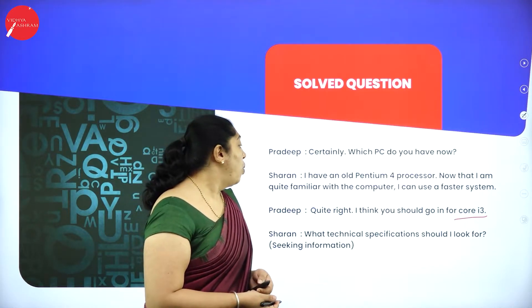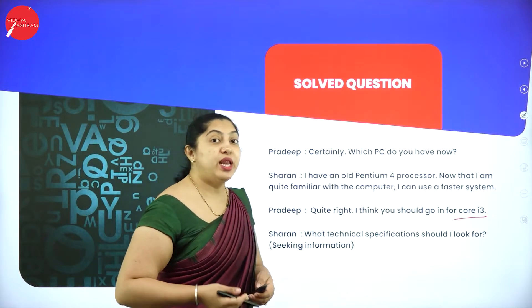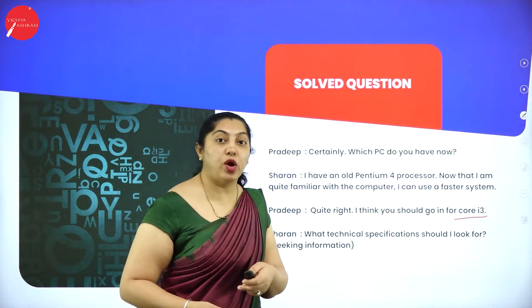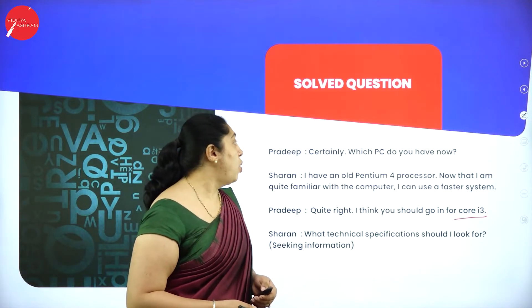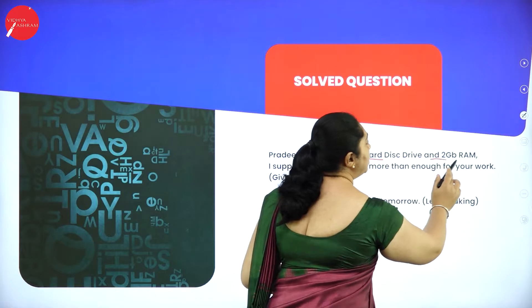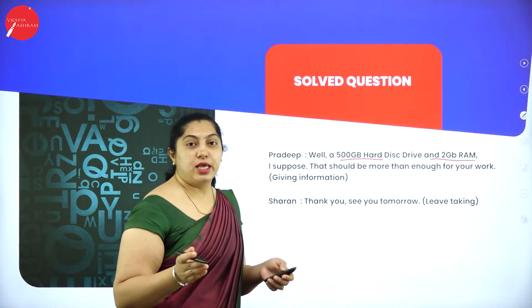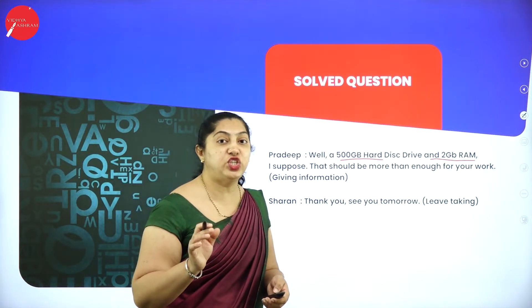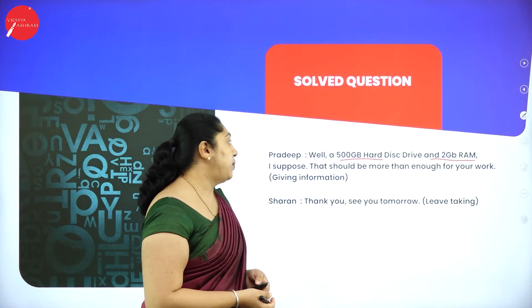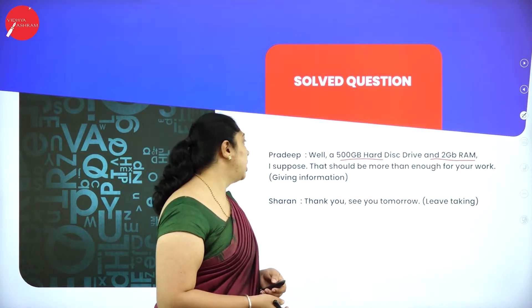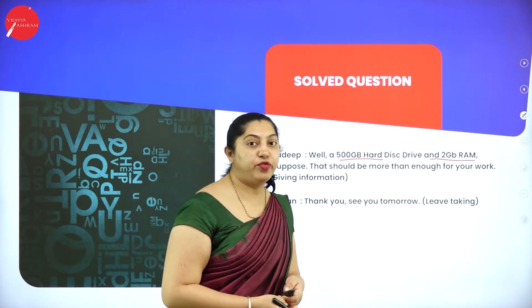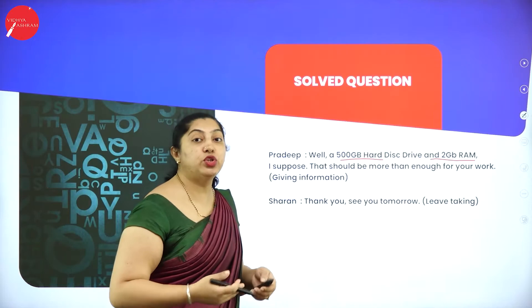Sharon asks: 'What technical specifications should I look for?' — seeking information about the configuration. Pradeep replies: 'A 500 GB hard disk drive and 2 GB of RAM.' For personal use to write a book, he says that should be more than enough for his work.